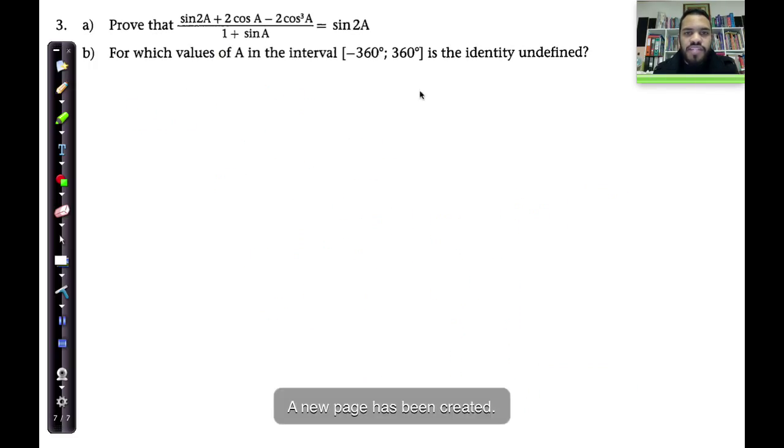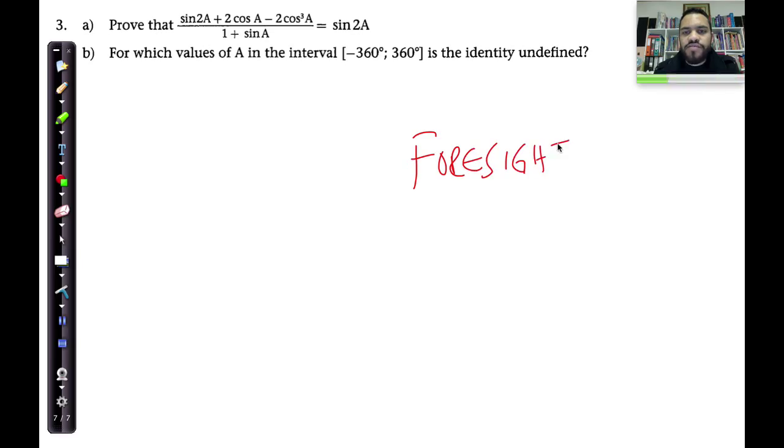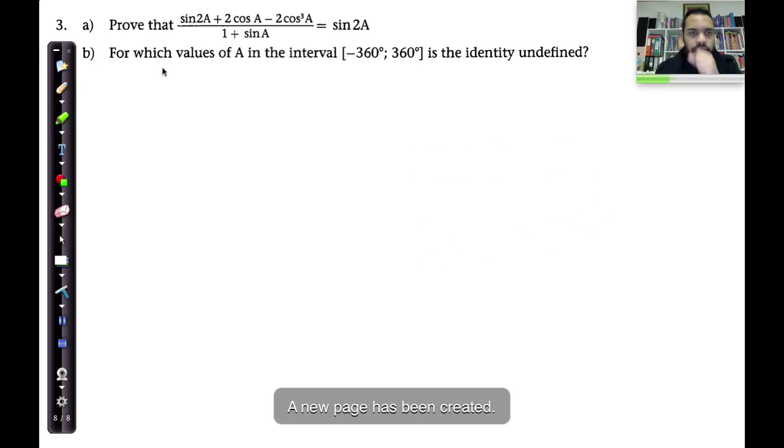And from time to time, you need to be creative. Sometimes you need to multiply by one in a creative manner to keep everything the same, just to get things looking more like the other side. Now, remember the two things I said you want to build up with doing such questions: number one is foresight, and number two is practice. The two work with one another, and this is the first type of question where we start seeing this coming into play.